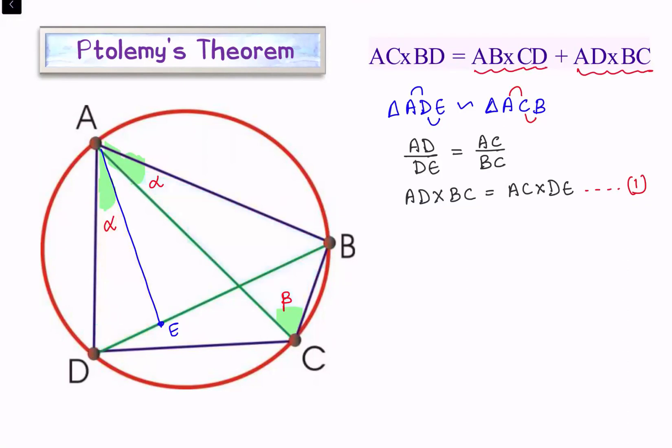The first triangle which we'll be taking is this yellow triangle. And the second triangle will be slightly overlapping it. We'll be taking this triangle here, triangle ADC. These two triangles is what we are taking.